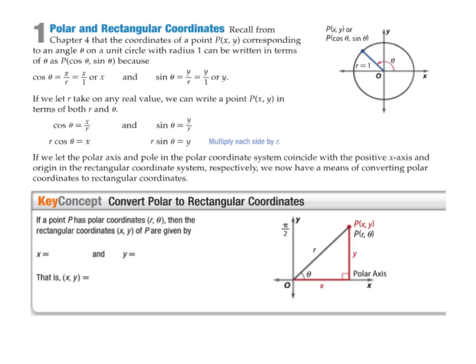Recall the coordinates of a point P(x, y) corresponding to an angle theta on a unit circle with radius one can be written as the ordered pair (cosine theta, sine theta), because in our unit circle, the cosine of the angle is adjacent over hypotenuse. The adjacent and hypotenuse correspond with the x value and the r value (the radius). Since r is one, cosine of theta corresponds with the x value, and sine of theta corresponds with the y value.